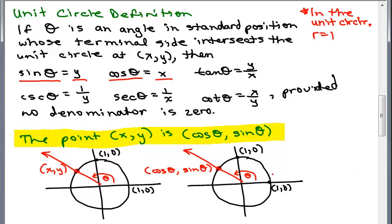So this is kind of interesting here. If you have an angle in standard position and you're going to choose a point that intersects the unit circle, that x value, that x coordinate is the cosine of θ and that y coordinate is the sine of θ.